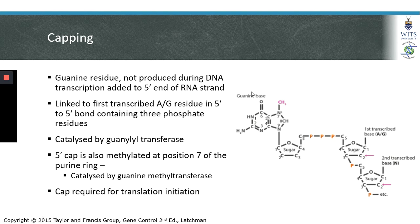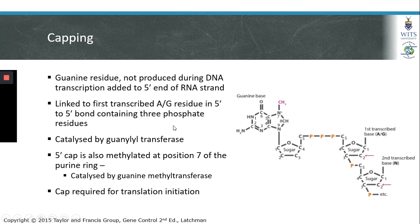5' capping is the addition of a guanine residue — one that is not produced during DNA transcription — to the 5' end of the RNA strand. This guanine base is not attached in the regular manner of nucleotide-to-nucleotide binding in a standard RNA molecule. The 5' cap differs in that it binds to the first transcribed base via a 5' to 5' bond, as opposed to a 3' to 5' bond. This process is catalyzed by an enzyme called guanyl transferase, where the ribose sugar of the guanine residue binds to the ribose sugar of the first base of the mRNA.